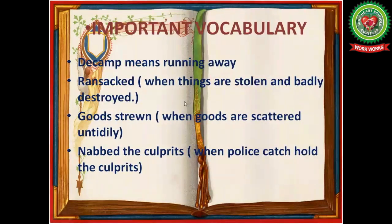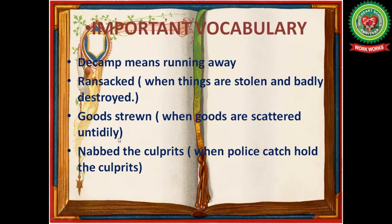Let us discuss some important vocabulary used in crime reports: 'decamped' means running away; 'ransacked' means when things are stolen and badly destroyed; 'goods strewn' means goods scattered untidily; and 'nabbed the culprits' means when the police catch hold of the culprits.